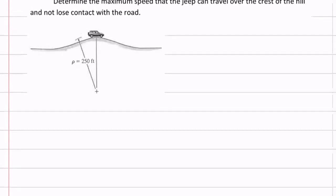So this one, I've got an object and I notice it's in a curved path — a red flag. If you're given the radius of something, that's a red flag that it might be in a curved path. So I'm going to draw the free-body diagram of this car, and then sum the forces equals mass times acceleration. Let me read the question: determine the maximum speed that the Jeep can travel over the crest of the hill and not lose contact with the road.